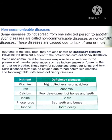Some diseases do not spread from one infected person to another. Such diseases are called non-communicable diseases or non-contagious diseases. These diseases are caused due to lack of one or more nutrients in the diet. Because they are caused due to lack of one or more nutrients, they are also known as deficiency diseases.